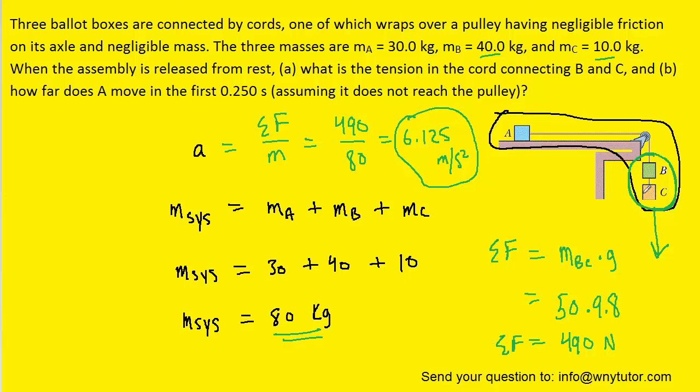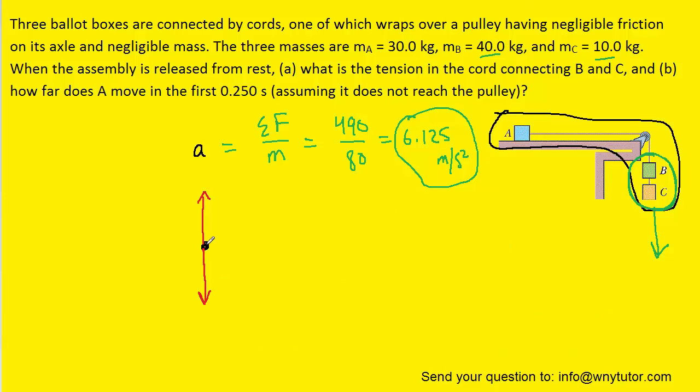Now, we're going to hold onto that acceleration, and we're going to look now at a free body diagram of block C. There are two forces acting on block C. We have the gravitational force acting downward, and then there is the tension in the rope between blocks B and C that is pointing upward.